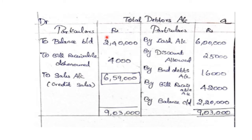By cash account: cash received from debtors $6,000. By discount allowed account: discount allowed to customers $25,000.